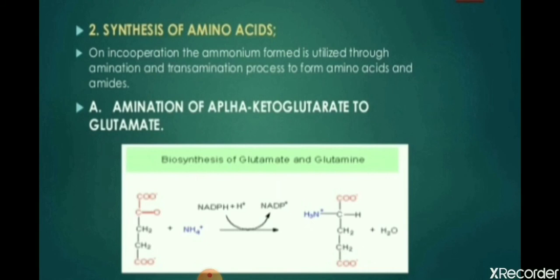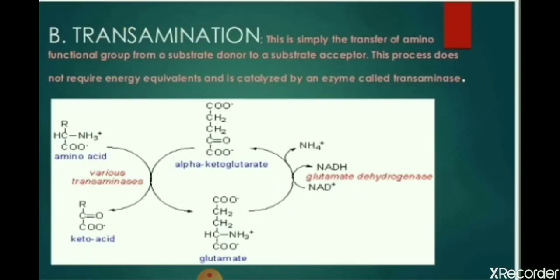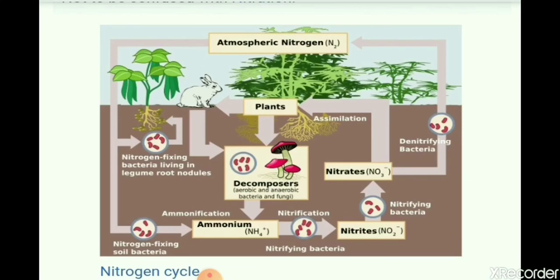The second step of nitrogen assimilation is synthesis of amino acids, in which amination of alpha-ketoglutarate to glutamate takes place, followed by the process of transamination. This is the transfer of an amino functional group from a substrate donor to a substrate acceptor. This process does not require energy equivalents and is catalyzed by an enzyme called transaminase. The whole process is performed in a cyclic manner and is called the nitrogen cycle.